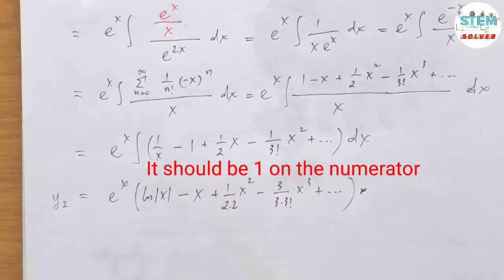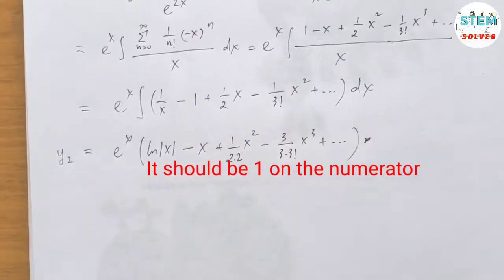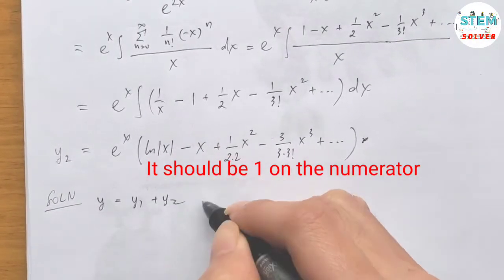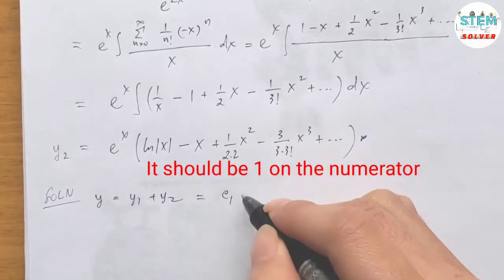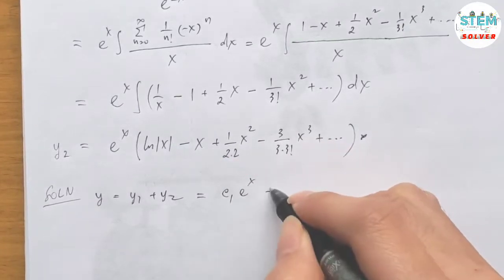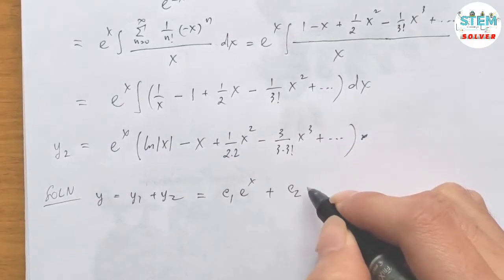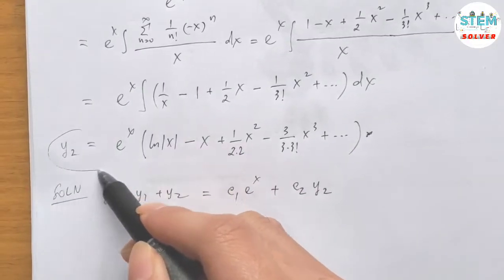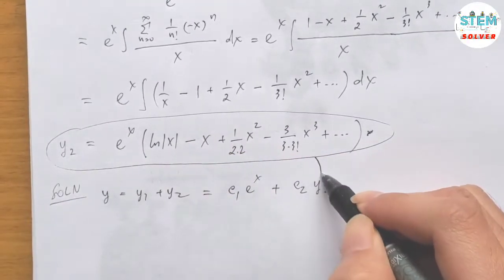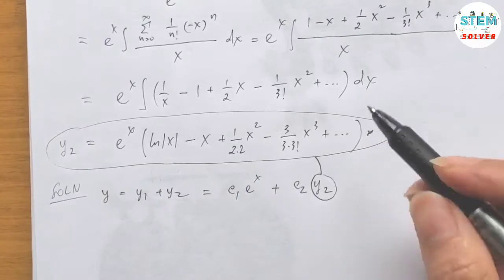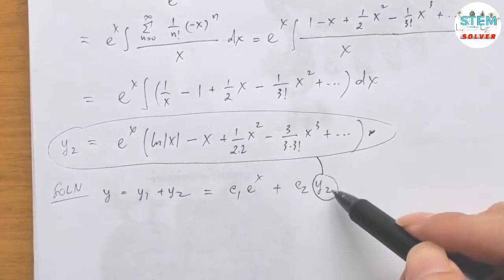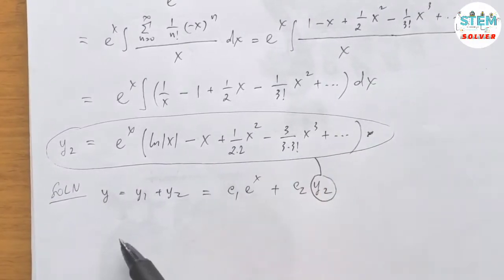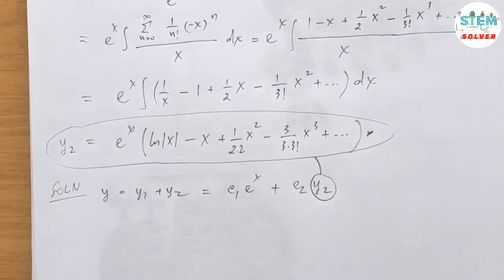So this is y_2, and our final solution is y equals c_1 · y_1 plus c_2 · y_2, where y_1 equals e to the x, and y_2 equals e to the x times (natural log|x| minus x plus 1 over 4 · x squared minus 1 over 18 · x cubed plus dot dot dot).